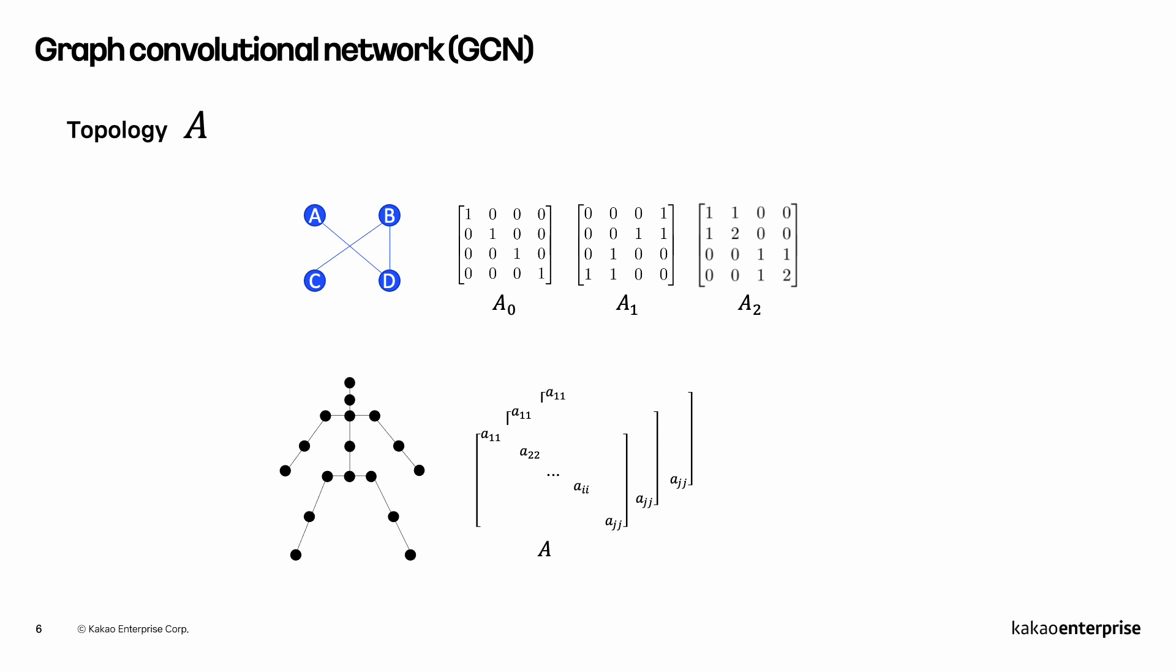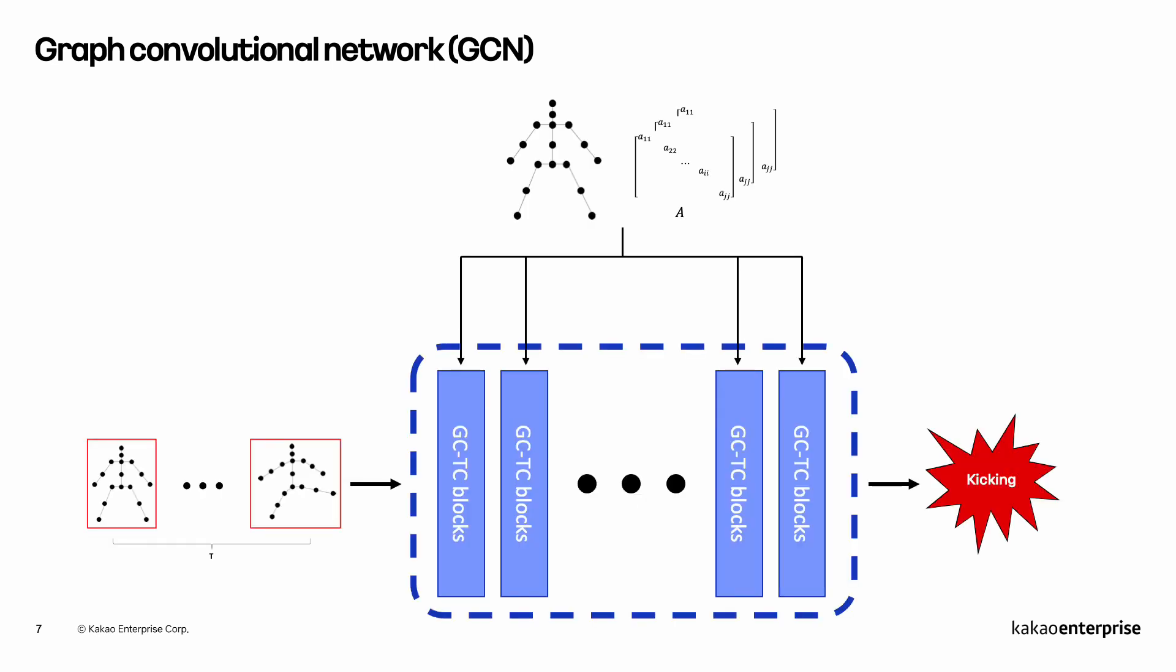GCN for action recognition uses topology that reflects the connections of human joints. Recent GCNs utilize topology A independently for each layer and make it trainable to have different semantics of features in different layers.